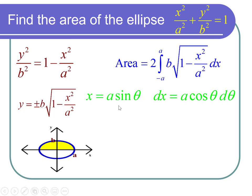First let's find dx and dx is equal to a cosine theta d theta. Now the square root of 1 minus x squared over a squared is the square root of 1 minus a squared sine squared theta over a squared. The a squared cancel, 1 minus sine squared theta is cosine squared theta, and the square root of cosine squared theta is cosine of theta. That's much nicer than that messy square root.